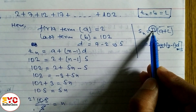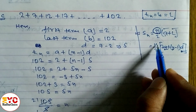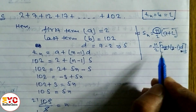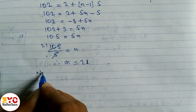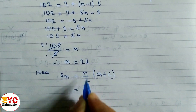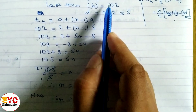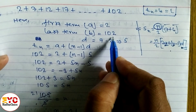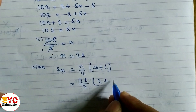Now we have n = 21, a = 2, and l = 102, so we can use S_n = n/2 × (a + l). Substituting: 21/2 × (2 + 102).